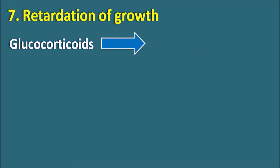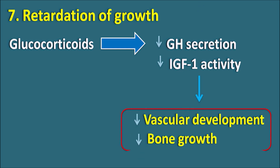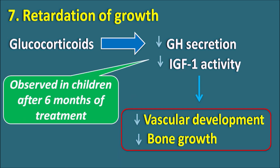The seventh side effect is retardation of growth, particularly observed in children. These drugs can reduce growth hormone secretion, which is required for bone length increase and tissue growth. They also reduce the activity of insulin-like growth factor 1 (IGF-1). Because of these two actions, glucocorticoids reduce vascular development and bone growth, resulting in growth retardation in children. This is due to suppression of the HPA axis — hypothalamus, pituitary, and adrenal axis — resulting in reduced pulsatile release of growth hormone after about six months of treatment.